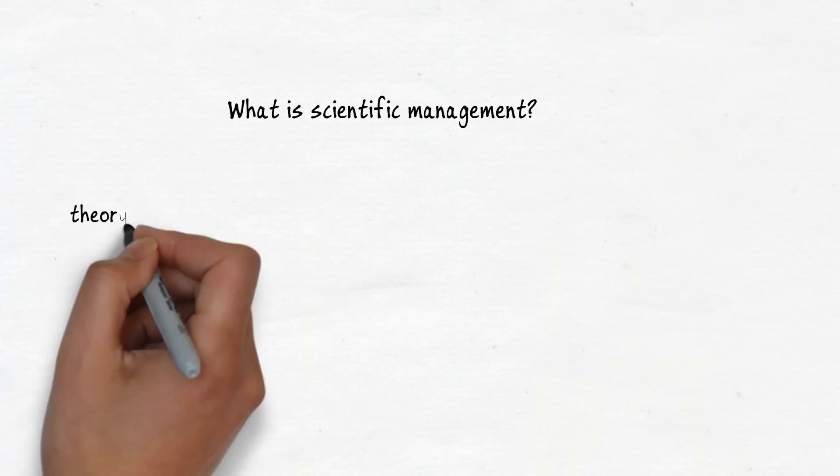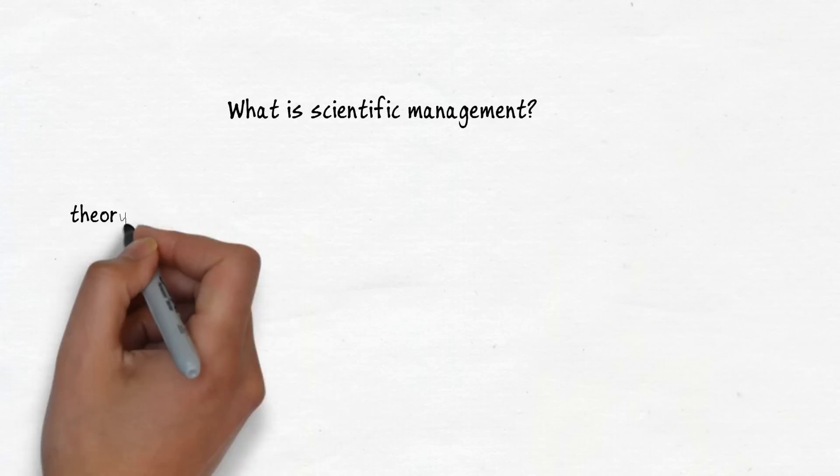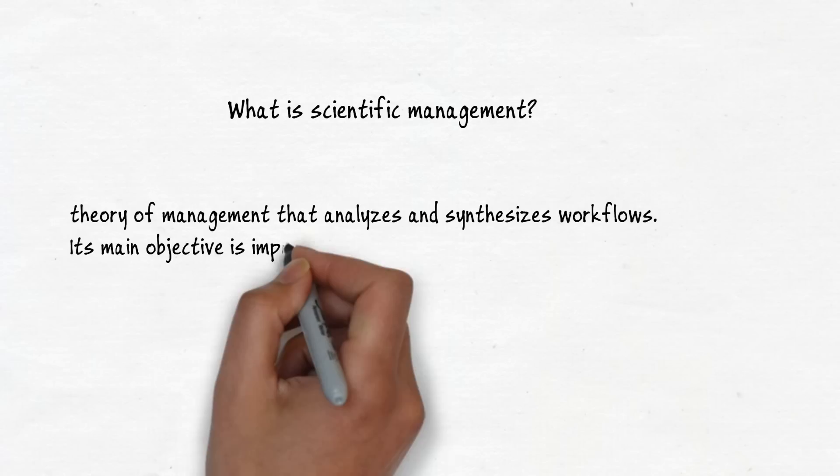What is scientific management? Wikipedia lists it as the theory of management that analyzes and synthesizes workflows. Its main objective is improving economic efficiency, especially labor productivity.